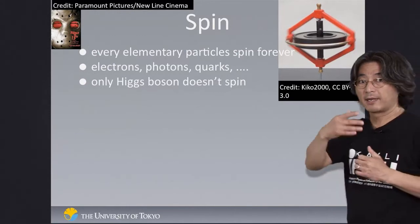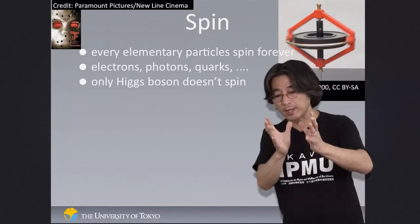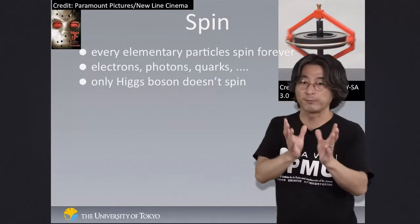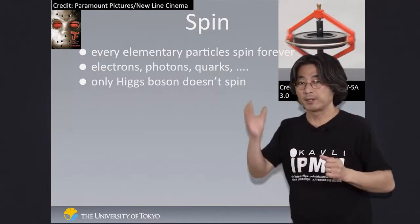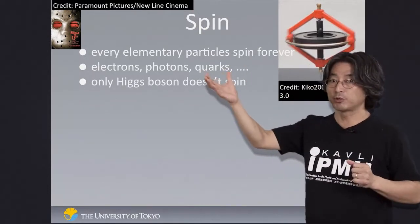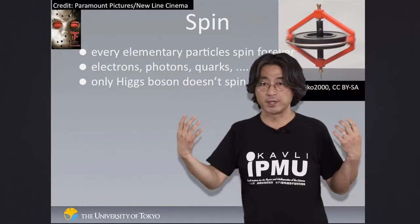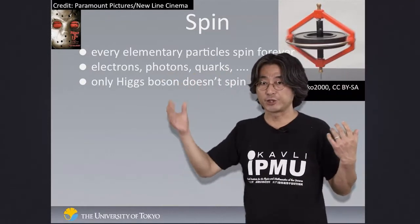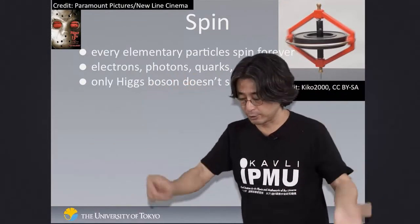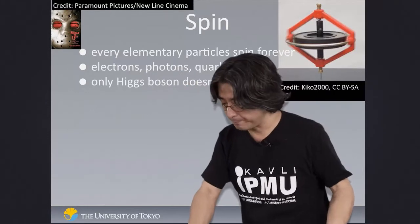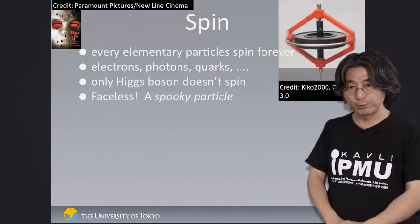But the Higgs boson shouldn't spin. In some sense, all these spinning particles have faces — we can look at them from different directions, we can study their orientation. But if the Higgs boson is stuck everywhere so that we wouldn't notice it, it shouldn't show any faces. It doesn't spin at all — it's a kind of faceless particle. It's kind of spooky.